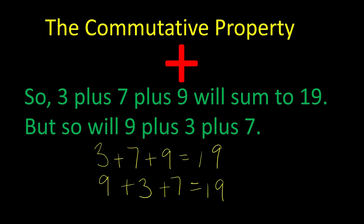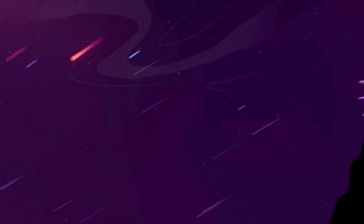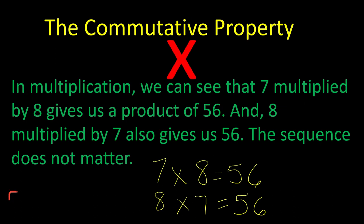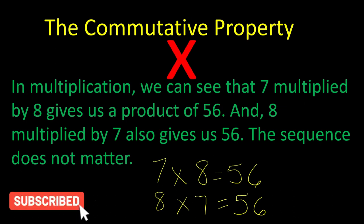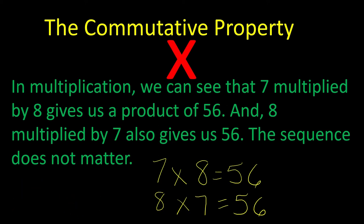In terms of addition, 3 plus 7 plus 9 will sum to 19, and so will 9 plus 3 plus 7. In multiplication, 7 multiplied by 8 gives us a product of 56, and 8 multiplied by 7 also gives us 56. So the sequence of the factors doesn't matter — it'll still give you the same answer.